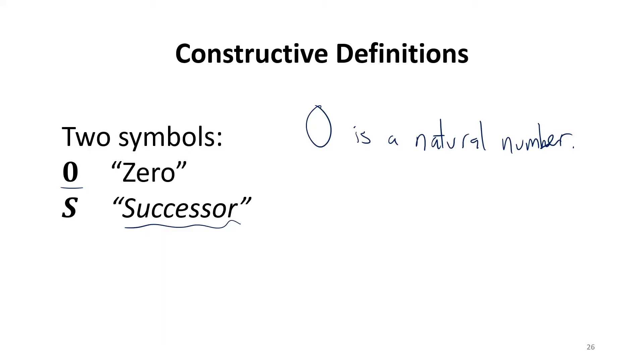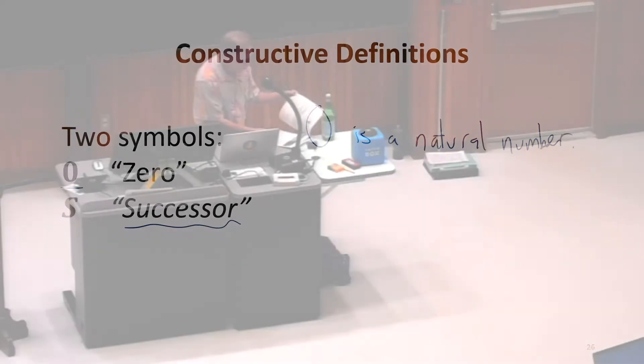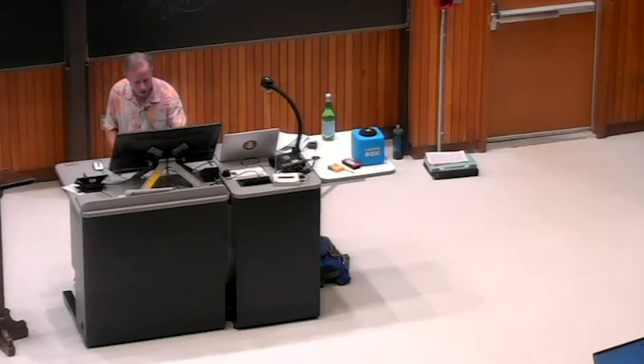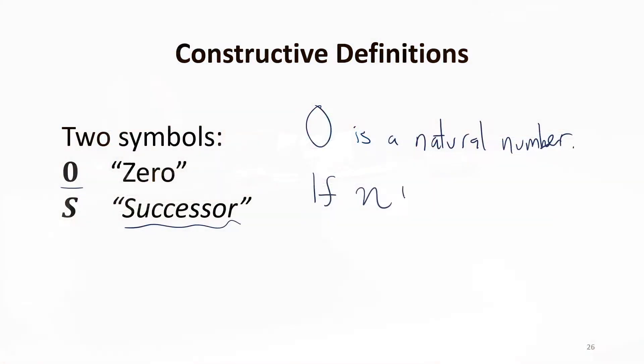Okay, yeah. We've got to find some way, if we have a natural number, to build a new one. So that's what we're going to use our successor function for. We're going to say, if we have something that's already a natural number. And here we can introduce notation. So we're going to use n, just because it's a nice notation. We're going to say, if n is a natural number.